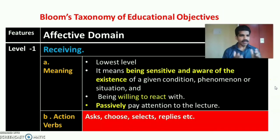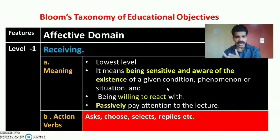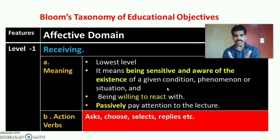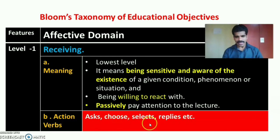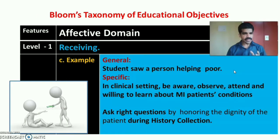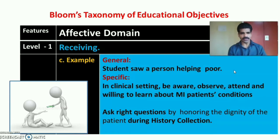The first level is receiving. Receiving is the lowest level of attitude development. It means being sensitive and aware of the existence of a given condition, phenomenon, or situation, and being ready and willing to react with it. For example, in a lecture method, a student passively pays attention to the lecture, starting to listen and giving passive attention. Action verbs include: asks, chooses, selects, replies. For example, a student observes someone helping a poor person and receives the concept of helping the poor.